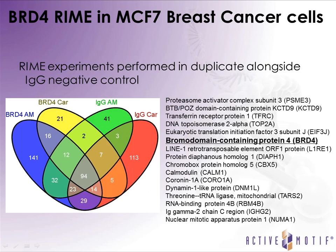An important aspect of this assay is performing it in replicate to get high-confidence data. Here I show two replicates of BRD4 in MCF7 cells and two IgG replicates. The IgG replicates are used to subtract out any non-specific interactions you would expect from any IP, so proteins identified in the IgG fractions are subtracted out, leaving proteins that are confidently enriched for your IP of interest.